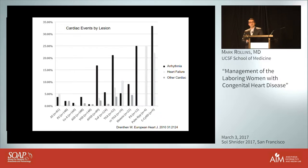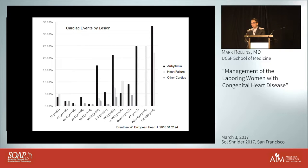Looking at complications by lesion, the two number-one complications with congenital heart defects are arrhythmias and heart failure. For moderate lesions on the left — ASDs, VSDs — rates are less than 5% for each. But as you get into tetralogy of Fallot and the cyanotic lesions, there are markedly increased rates of arrhythmia and heart failure. These are the two things we're always worried about when pregnant women labor with these underlying cardiac defects.